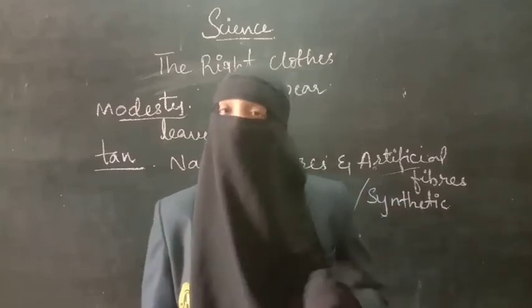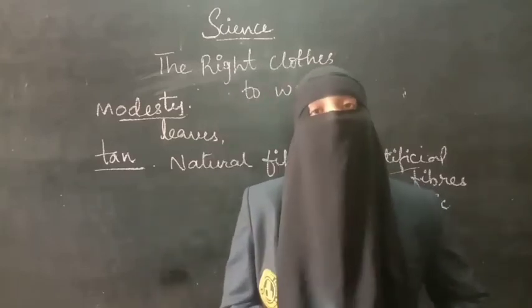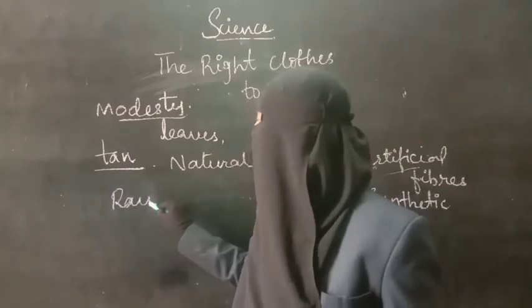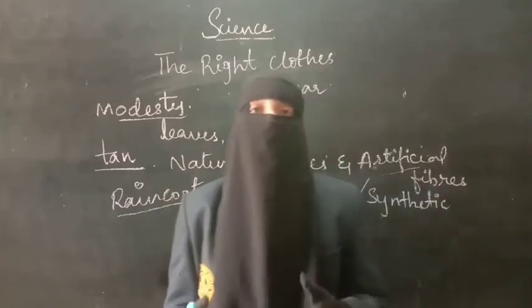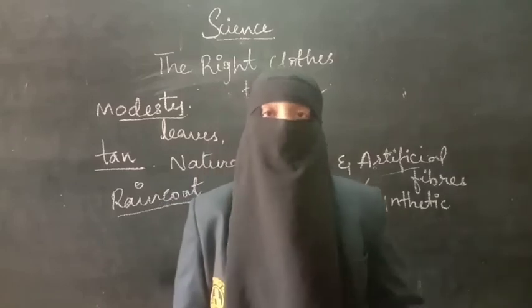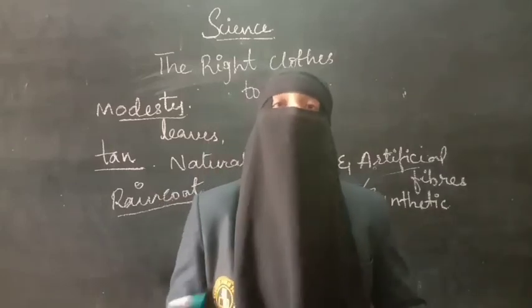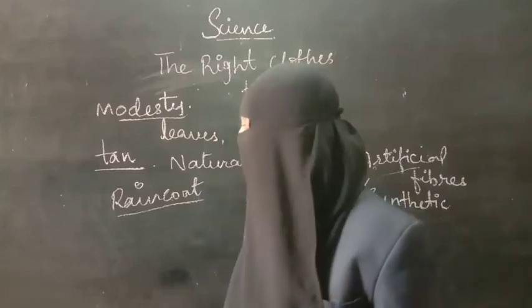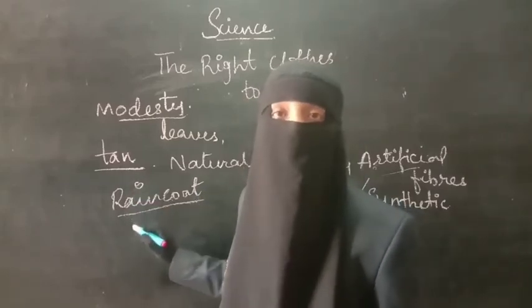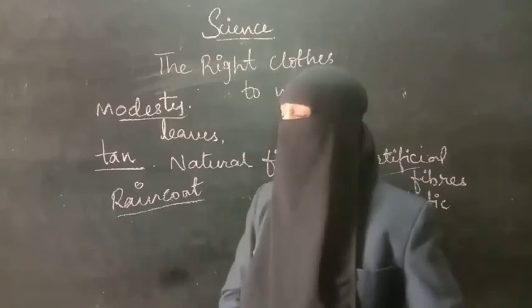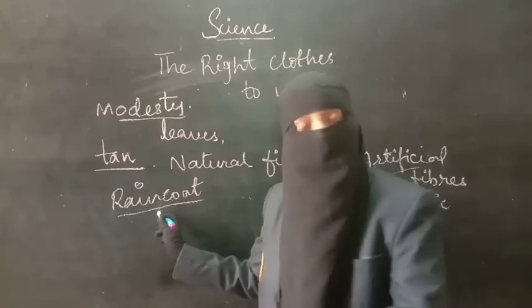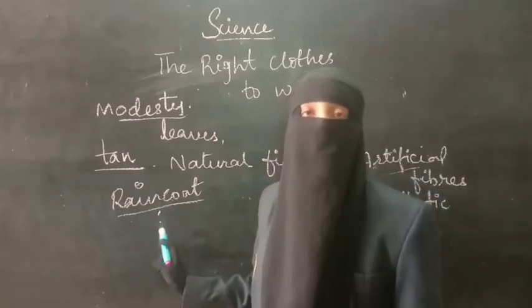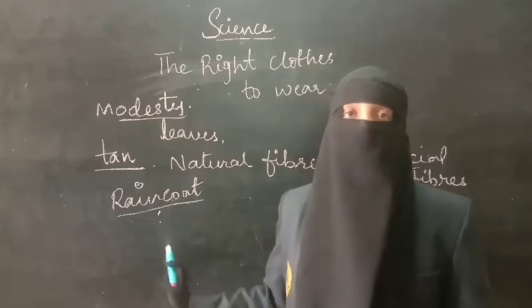In rainy season, what do we wear to protect ourselves from rain? We wear a raincoat. Raincoat is made up of special fabric that is waterproof — meaning water cannot pass through that fabric and it cannot be absorbed by it. So, raincoat is made up of waterproof fabric. We use different types of clothes in different seasons — in rainy season when going out, we use umbrellas and raincoats.